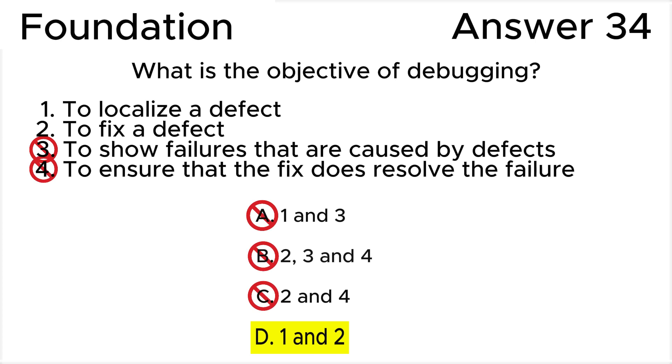Remember these two terms. Confirmation testing is retesting to check if the bug or failure has been fixed. And regression testing is testing all the areas to see if they work properly as a result of the changes made to the code. Don't mix up all these definitions.